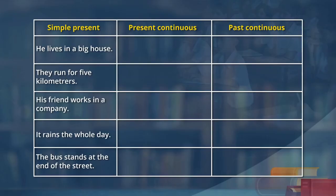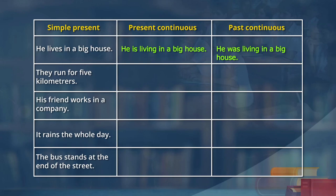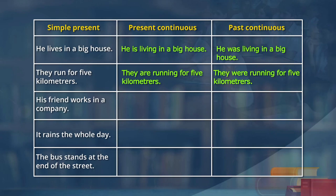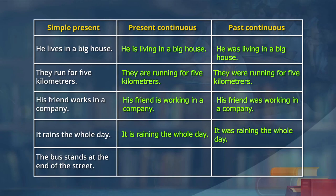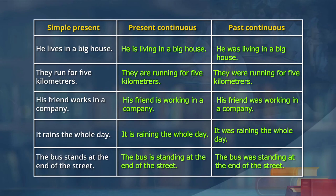Here is a table for you with a few sentences. I am going to say the sentence in simple present, and you have to say present continuous and past continuous. He lives in a big house - he is living in a big house - he was living in a big house. They run for 5 kilometers - they are running for 5 kilometers - they were running for 5 kilometers. His friend works in a company - his friend is working in a company - his friend was working in a company. It rains the whole day - it is raining the whole day - it was raining the whole day. The bus stands at the end of the street - the bus is standing at the end of the street - the bus was standing at the end of the street.